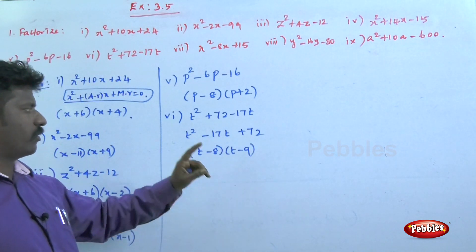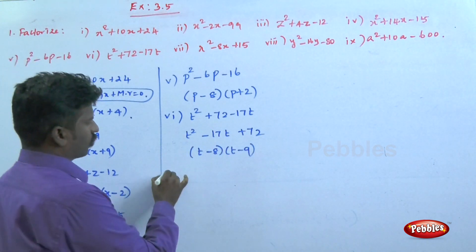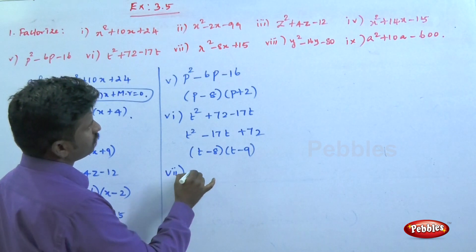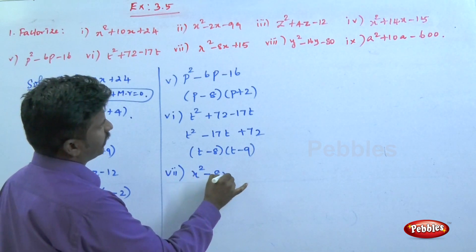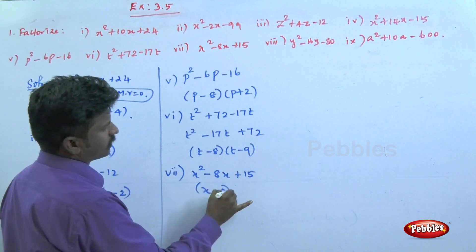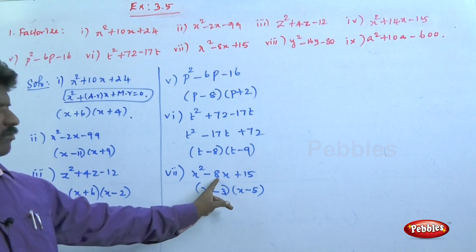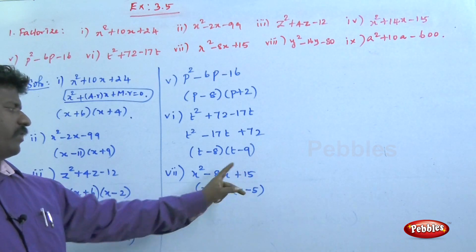Question number seven: x² - 8x + 15. This can be written as (x - 3)(x - 5). -3 - 5 = -8, 3 × 5 = 15.